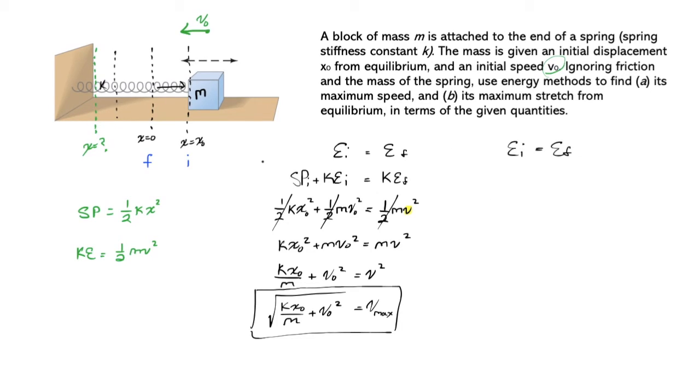EI is again equal to EF. As before, we expect our spring and kinetic to start here, so we're going to use the same variables. We have 1/2 k x naught squared plus 1/2 m v naught squared. No changes there.